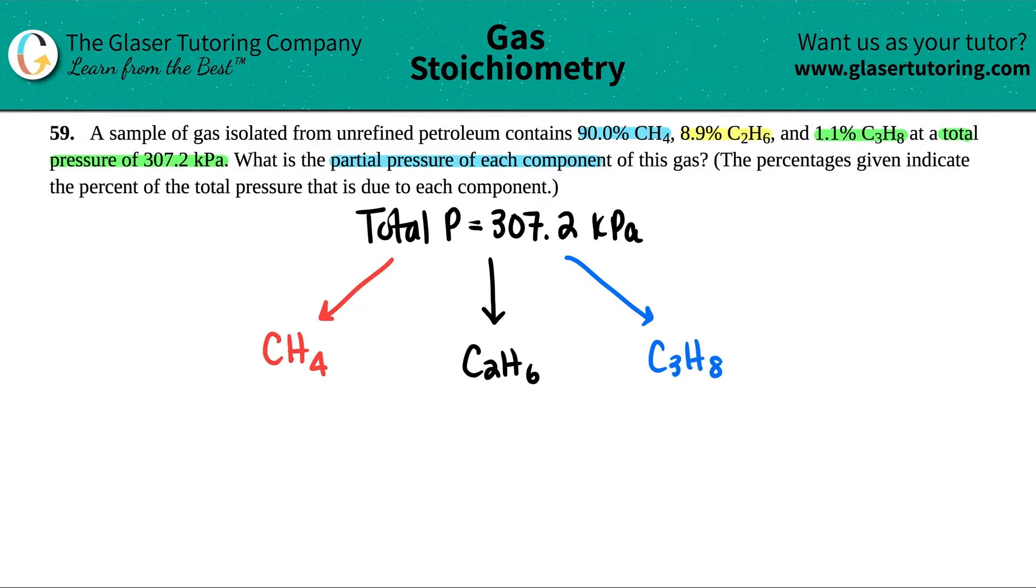Now they did tell us the percentages of them. They told us that in this whole sample of gas, 90% was made up of the methane, CH4.